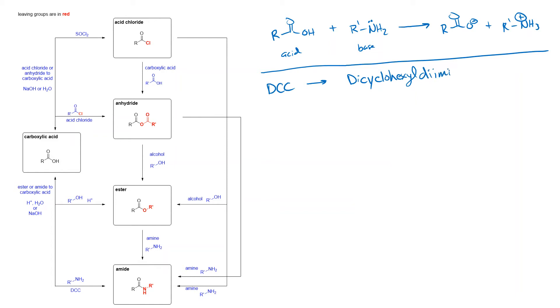Dicyclohexyl carbodiimide. You can see why we abbreviated it. Dicyclohexyl carbodiimide. And it's a compound that looks like this. You have a carbon that has two double bonds to N, and then each of those is connected to a cyclohexyl group.